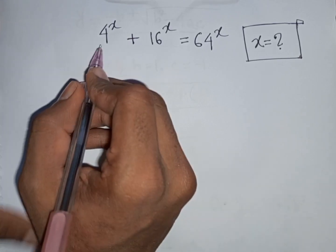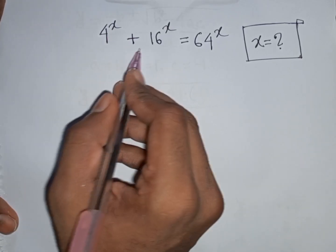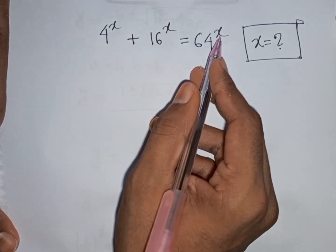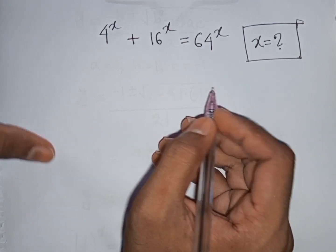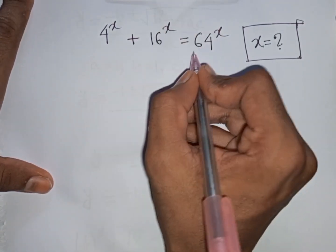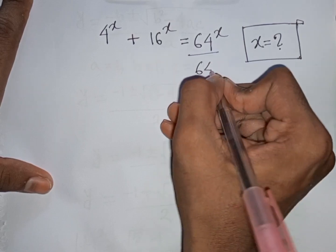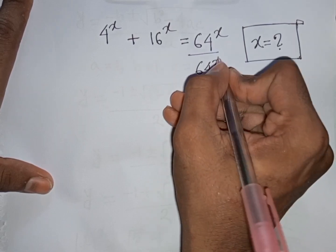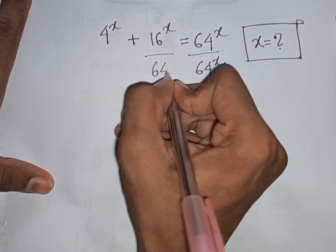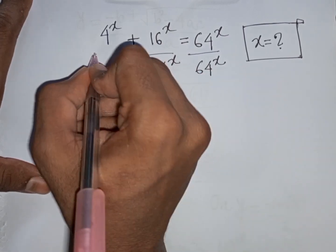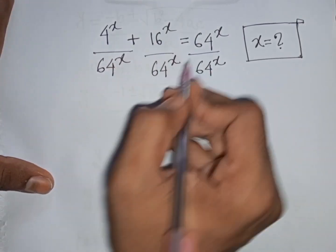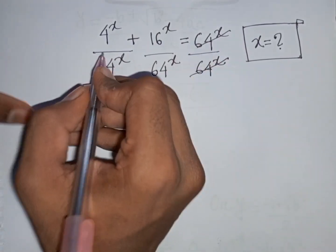How to solve 4^x + 16^x = 64^x. Find the value of x. First, we divide both sides by 64^x. So divided by 64^x on both sides — this will be cancelled.